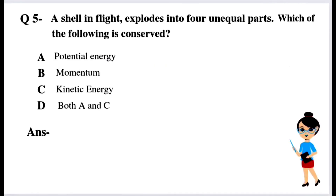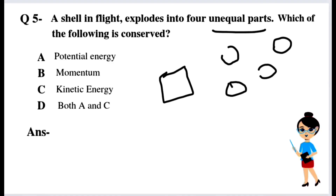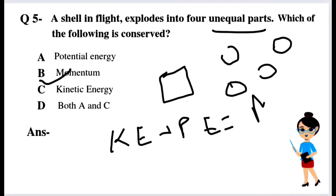Question number 5: A shell in flight explodes into 4 unequal parts. Which of the following is conserved? Option A: potential energy. Option B: momentum. Option C: kinetic energy. Option D: both A and C. When the shell explodes, kinetic energy and potential energy are not individually conserved — total mechanical energy changes due to the explosion. However, momentum is conserved. So option B — momentum — is the right answer.